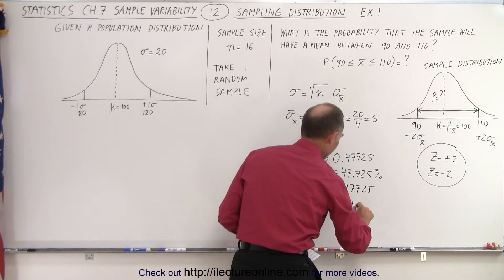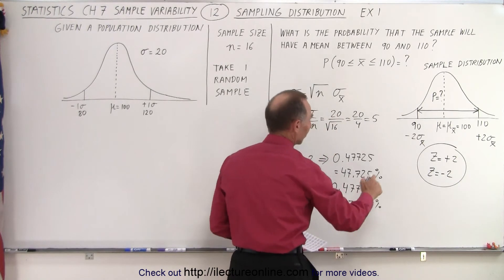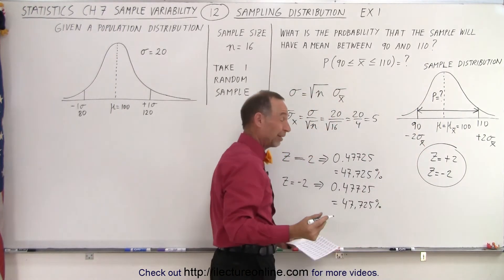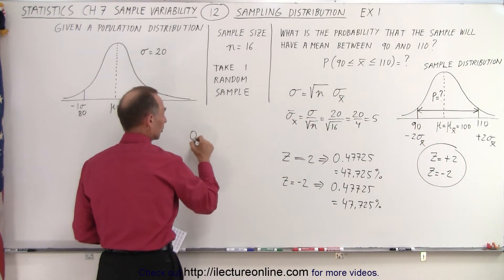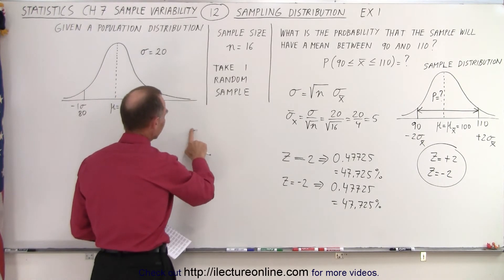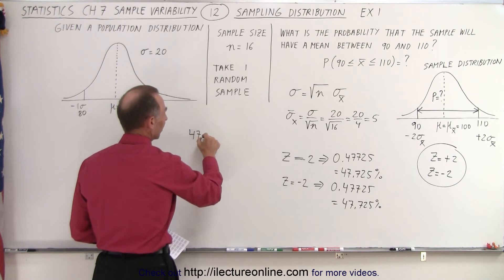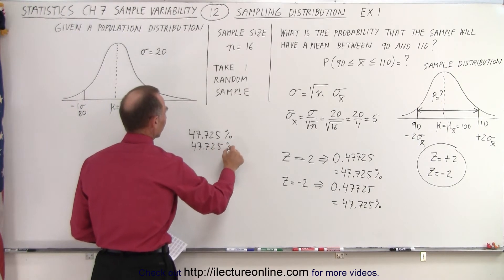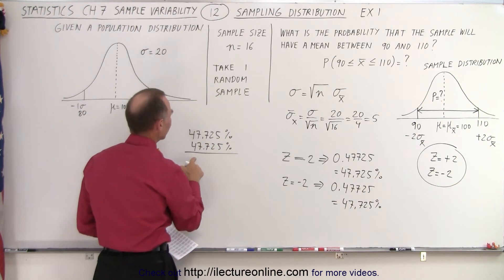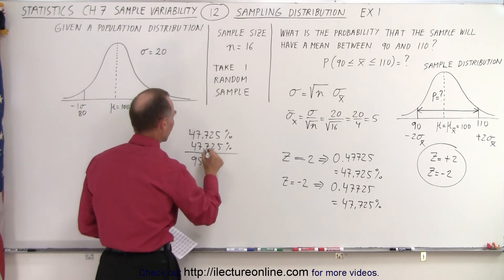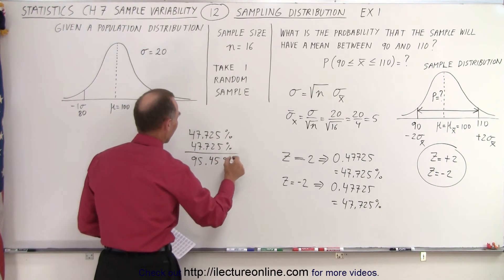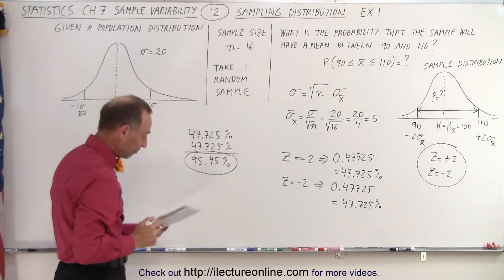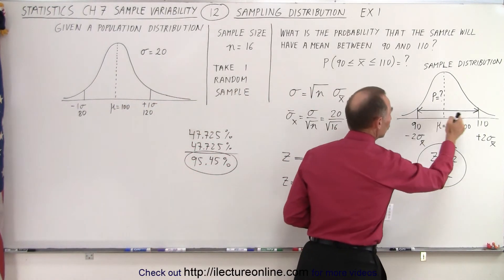So we have 47.725% for the right side and 47.725% for the left side. When we add those two up we get 95.45 percent. That is the probability that the one sample of sample size 16 will have its mean fall within the range of 90 to 110.